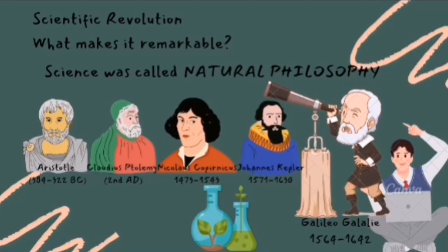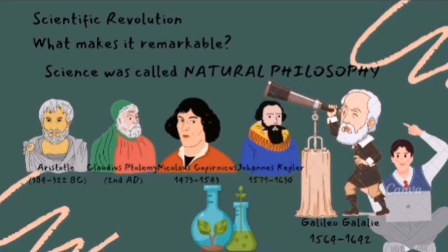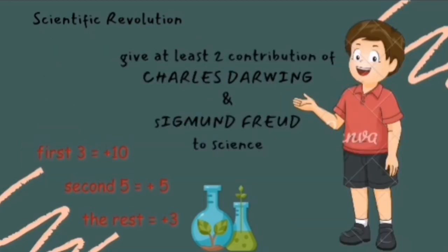In physics, the greatest achievement of the scientific revolution belonged to the English scientist Isaac Newton. Newton formulated a set of mathematical laws and explained how the entire physical world operates. For additional points, can you give at least the contributions of Charles Darwin and Sigmund Freud to science?